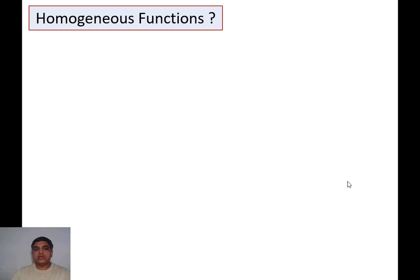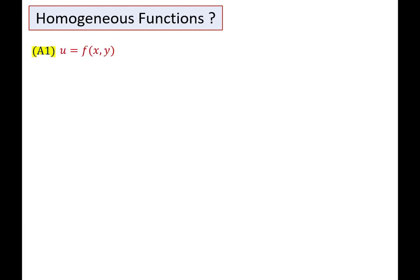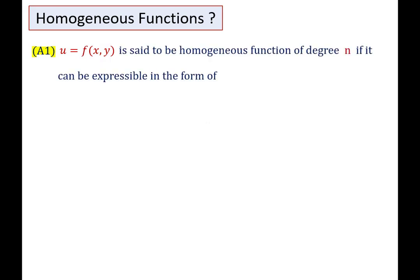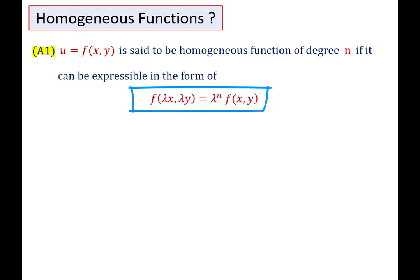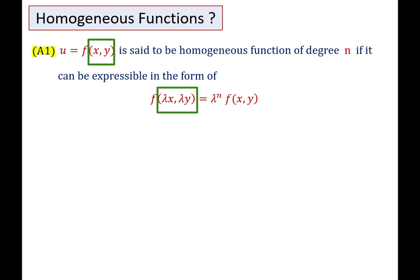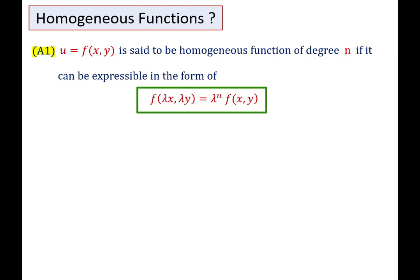Let's start with the first approach. Suppose U is a function of two variables X and Y, where U is the dependent variable and X and Y are independent variables. F is said to be a homogeneous function of degree n if it can be expressible in the form F(λX, λY) = λ^n F(X, Y). We replace X by λX and Y by λY in the function F(X, Y), and if we get this form, the function is called a homogeneous function of degree n; otherwise it is a non-homogeneous function.